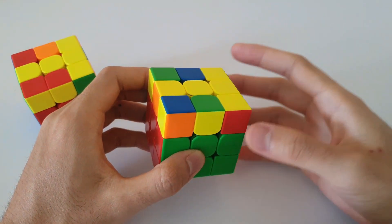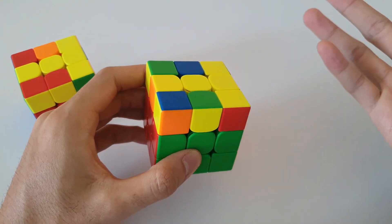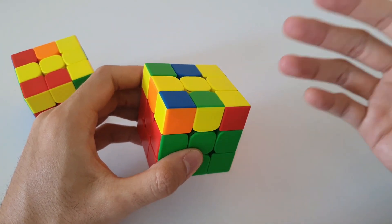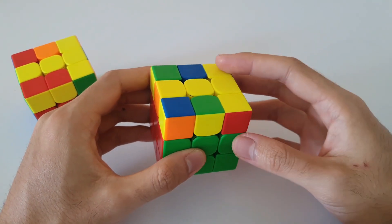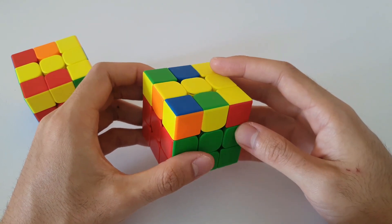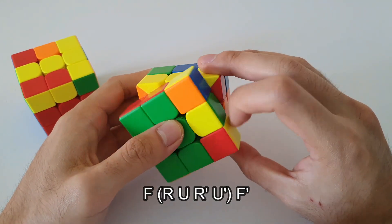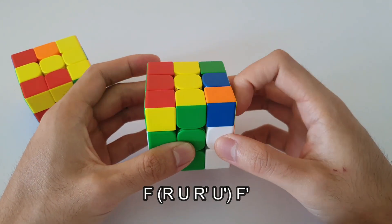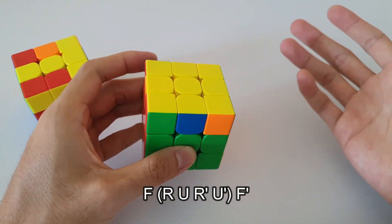So the algorithm for this case is actually very straightforward. A lot of you might recognize this from two look OLL or maybe even the beginner's method and it's very straightforward. It goes like this. So it starts off with an F, sexy, followed by an F' and that's it.